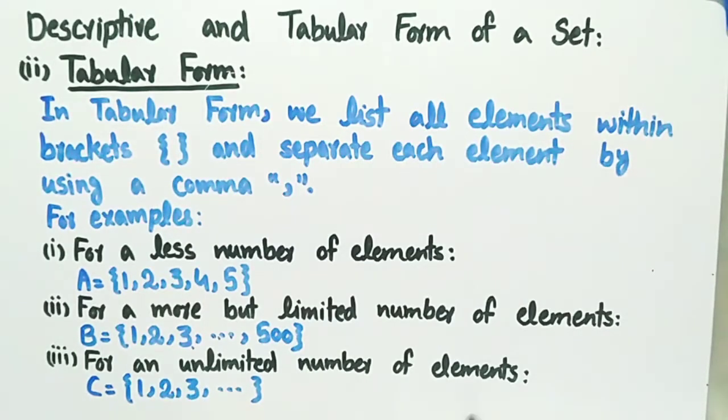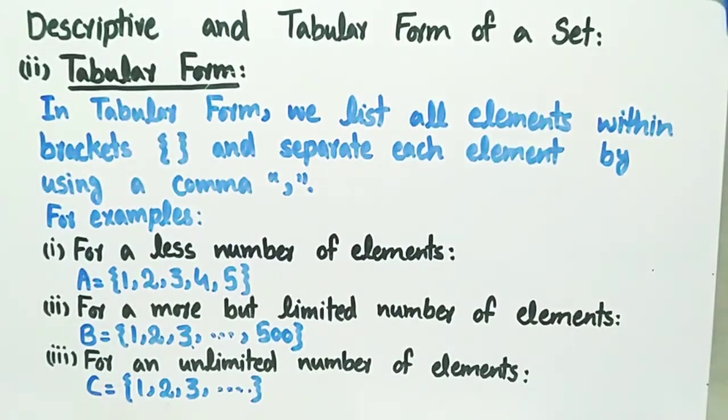In example three, for an unlimited number of elements, we have written the set C and its elements are in curly brackets separated by commas: one, two, three, and so on. These dots represent that these elements are infinite.